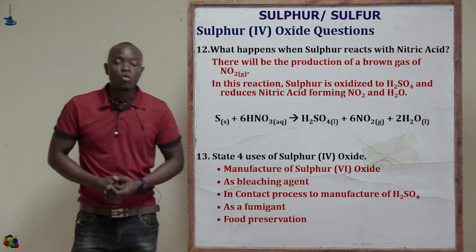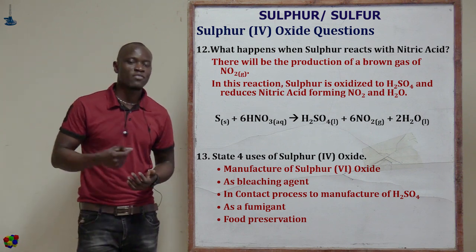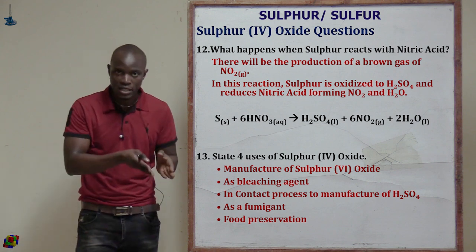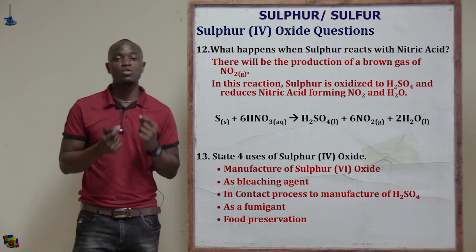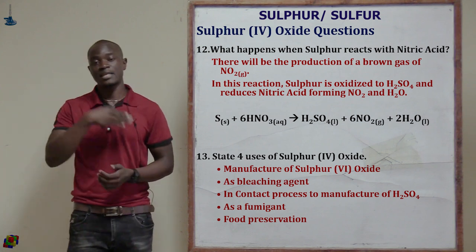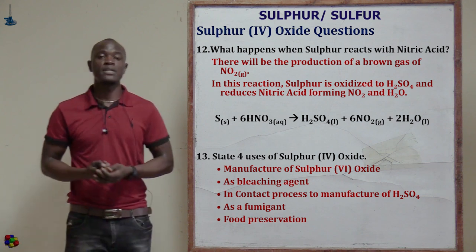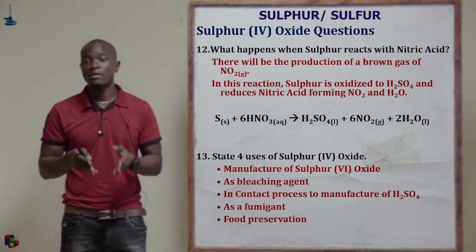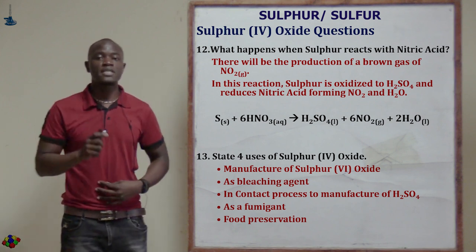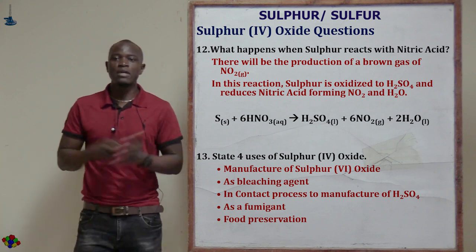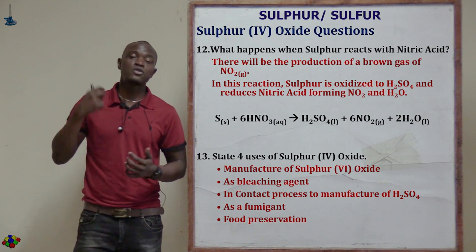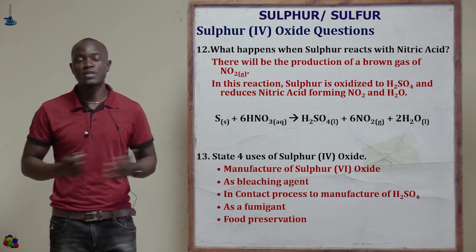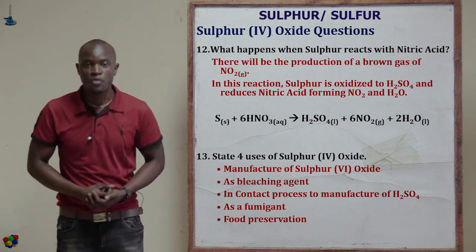Question twelve asks: what happens when sulfur reacts with nitric acid? In this process, sulfur acts as a reducing agent and nitric acid acts as an oxidizing agent. Brown gas of nitrogen 4 oxide will be produced. Sulfur will be oxidized to sulfuric acid, and nitric acid will be reduced to nitrogen 4 oxide gas.